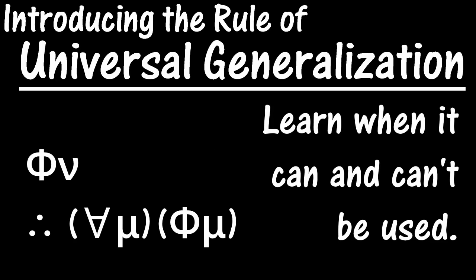In this video, we're going to begin to look at the rule of universal generalization. This is one of our quantification rules for predicate logic, and it lets us go from a particular statement to a universal statement, but there are restrictions on how it's used, and we'll learn about those in this video.